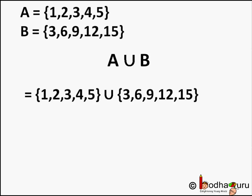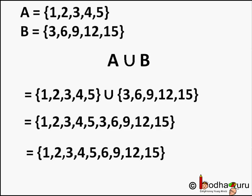That is 1, 2, 3, 4, 5, 3, 6, 9, 12, 15. Look, 3 is common in both the sets. So when we write A union B we will write it only once, because A union B is also a set and a set should have all the elements as unique.